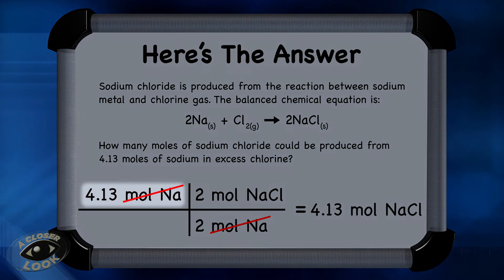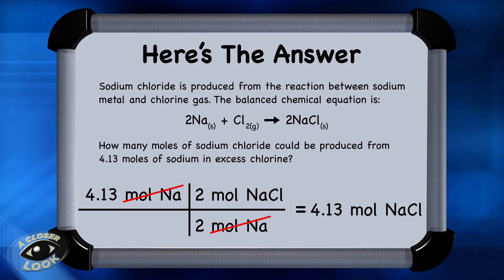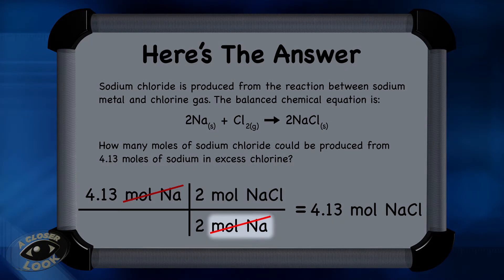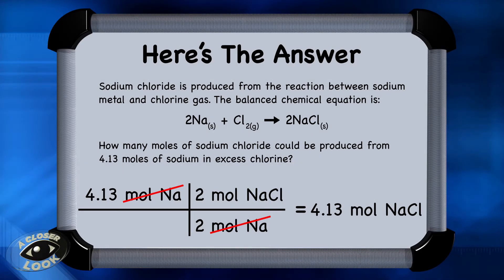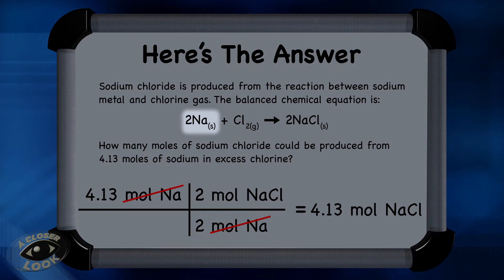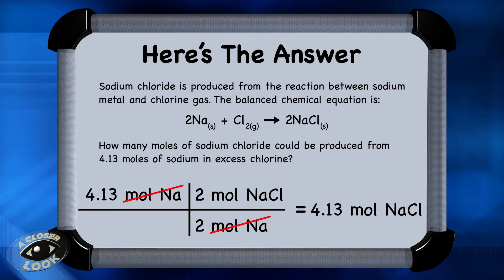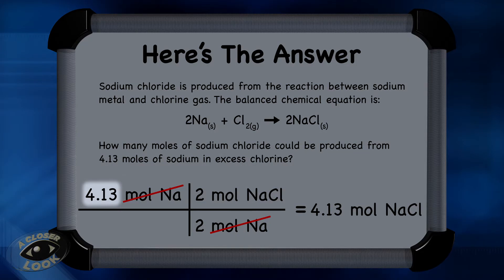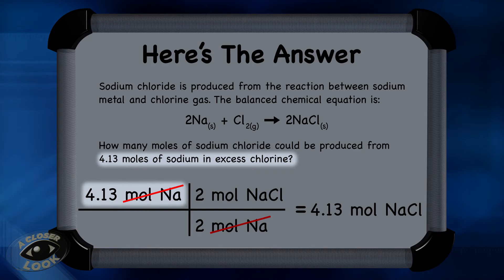Hopefully your setup looks similar to this one. We took 4.13 moles of sodium, which was given in the problem, and put that in the upper left-hand corner of the conversion chart, brought the units of moles of sodium down, and converted from moles of sodium to moles of sodium chloride. From the balanced equation, the coefficient is 2 in front of sodium, so you put a 2 here, and 2 is the coefficient in front of sodium chloride, so you put a 2 here. Notice the units of moles of sodium cancel out, leaving moles of sodium chloride. Multiplying 4.13 times 2 divided by 2, you find that 4.13 moles of sodium chloride can be produced if 4.13 moles of sodium react in excess chlorine.